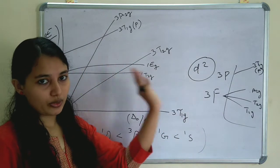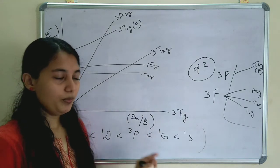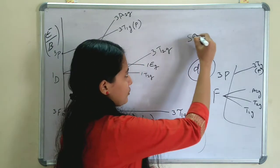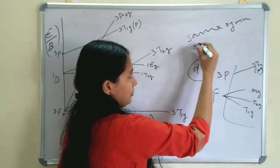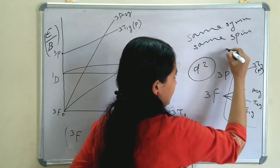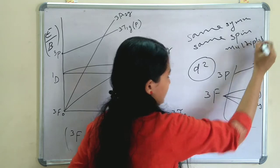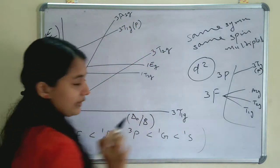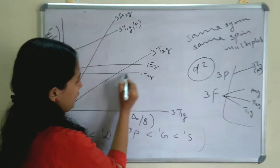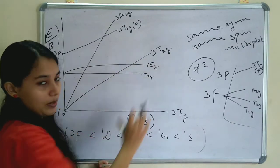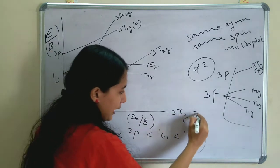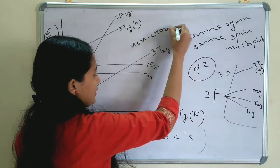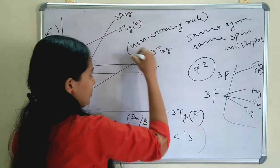An important rule in the Tanabe-Sugano diagram is the non-crossing rule: terms of the same symmetry or same spin multiplicity will not cross each other. For example, 3T1G(F) and 3T1G(P) are non-crossing. However, 1T2G can cross 3T2G because they are not of the same symmetry or same spin multiplicity. This is the non-crossing rule in the Tanabe-Sugano diagram.